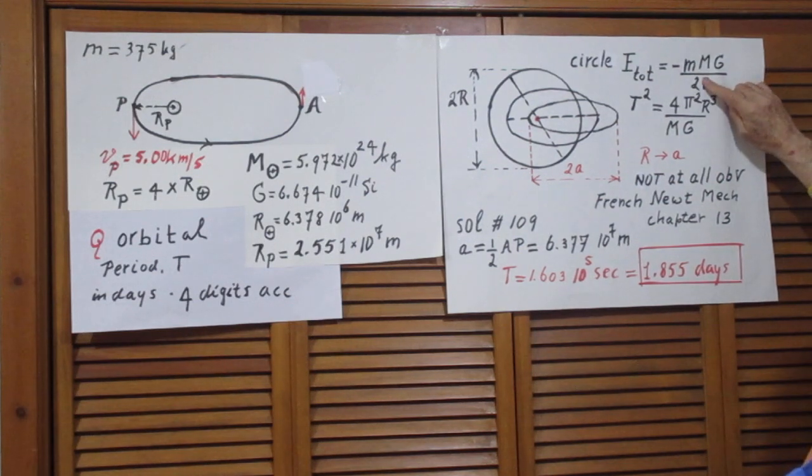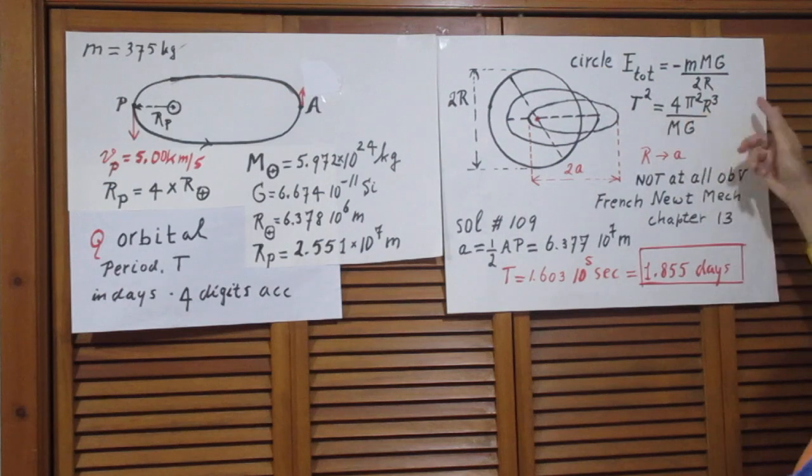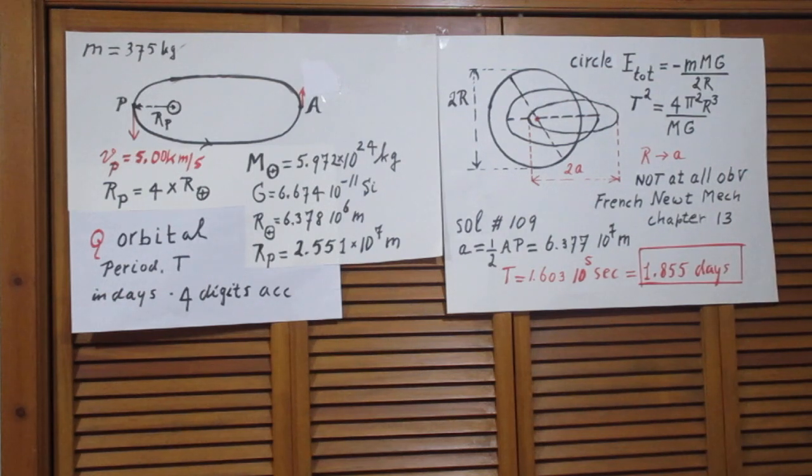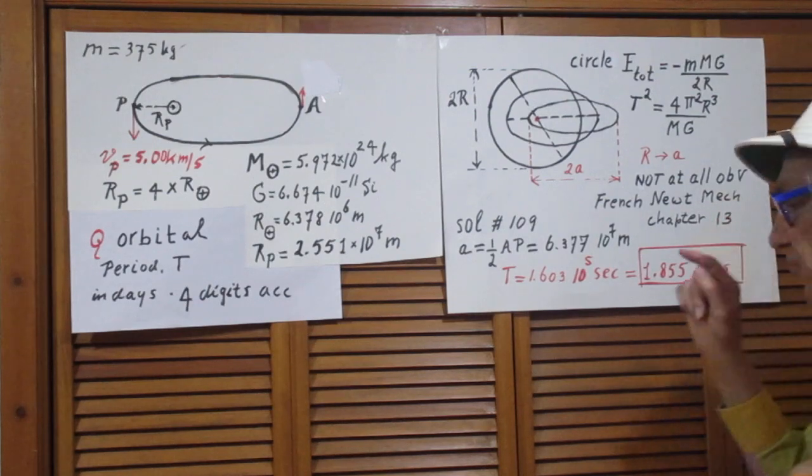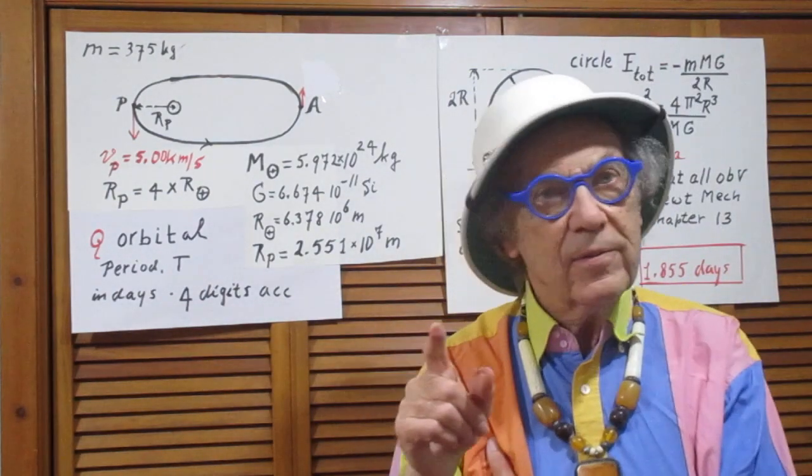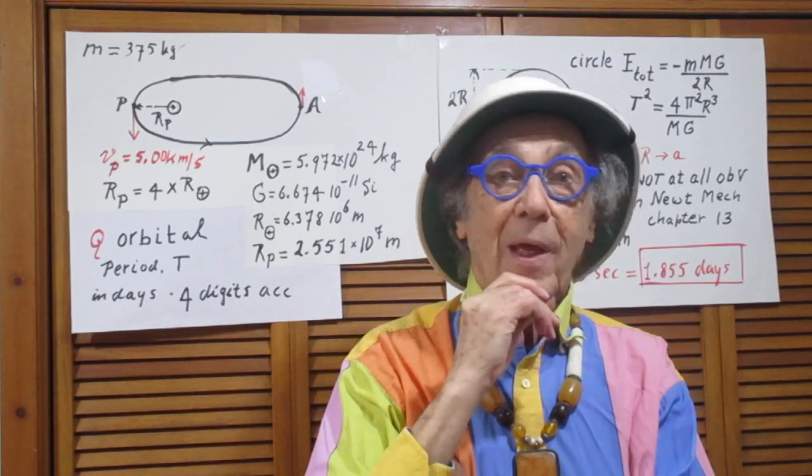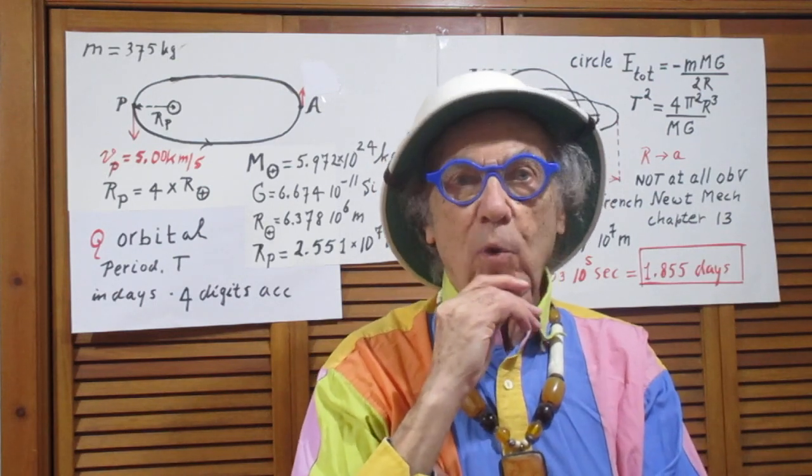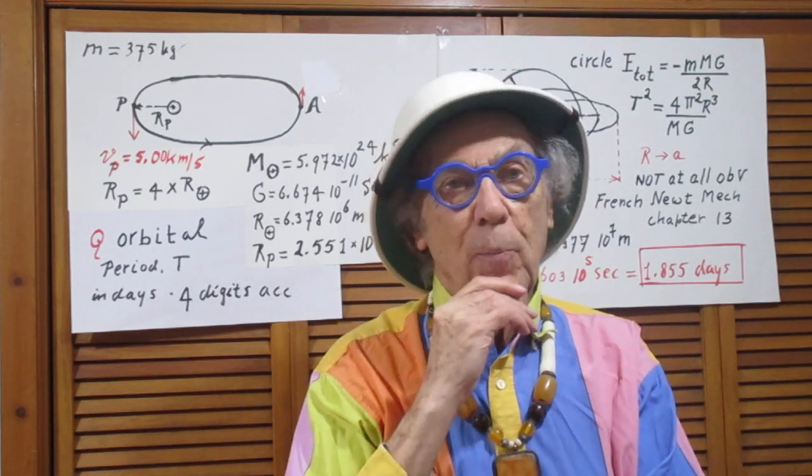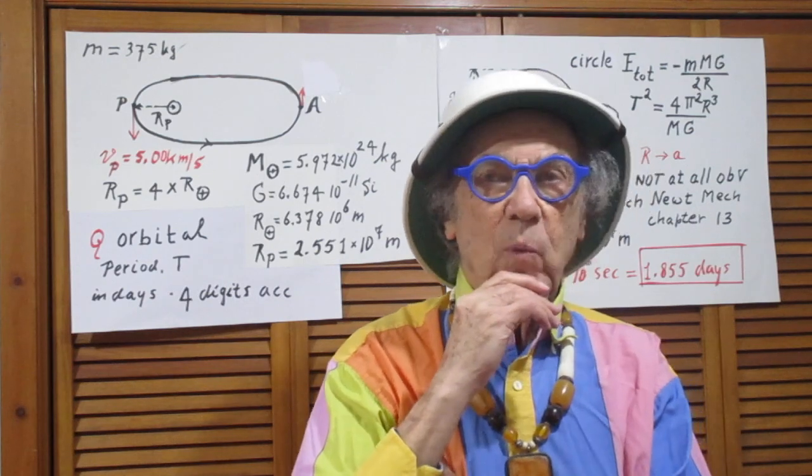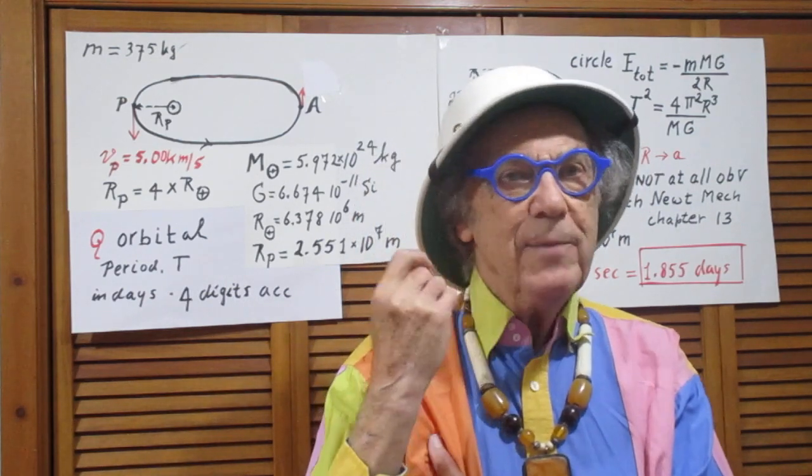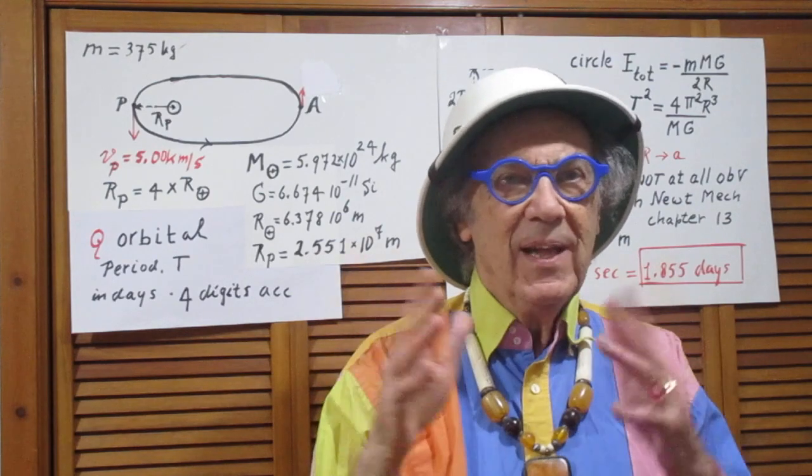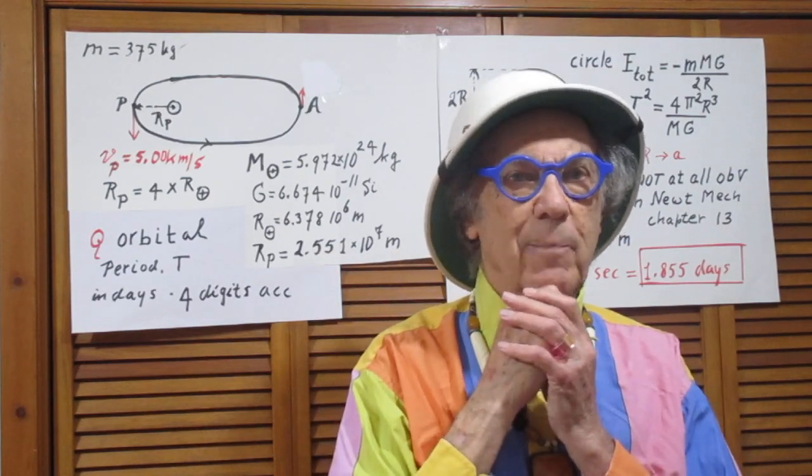So all you have to do is replace this by an A and replace this by an A and then you would have the total energy and you would have the orbital period. It is not at all obvious and most physics books mention it but don't prove it. And the reason why most books don't prove it and I didn't prove it is that it becomes mathematical a little bit of a headache. You have to deal with ellipticities and I wanted to stay away from that in my lecture 22.